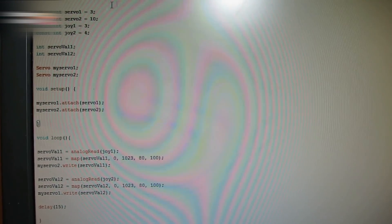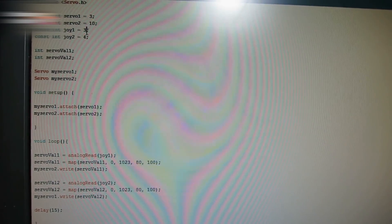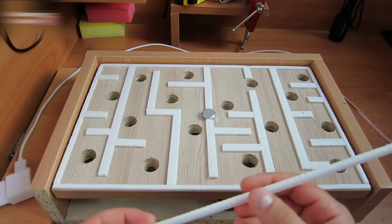The sketch is really simple. Connect an orange servo to pin 3 and another one to pin 10. Connect the joystick's X and Y pins to 3 and 4. Then,